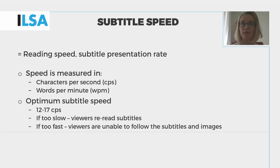An important constraint in subtitling is speed. The speed at which subtitles are displayed is known as reading speed, subtitle speed, or subtitle presentation rate. It's typically measured in either characters per second or words per minute. While the optimum reading speed is a subject of heated debates and differs from country to country and from company to company, interlingual pre-recorded subtitles are typically displayed at the speed of 12 to 17 characters per second.